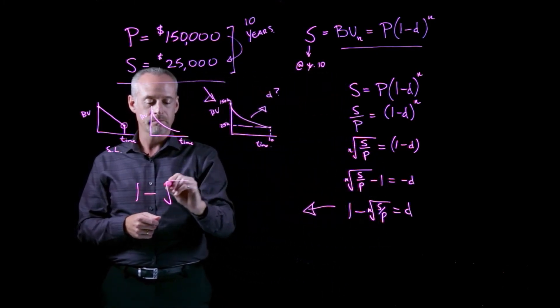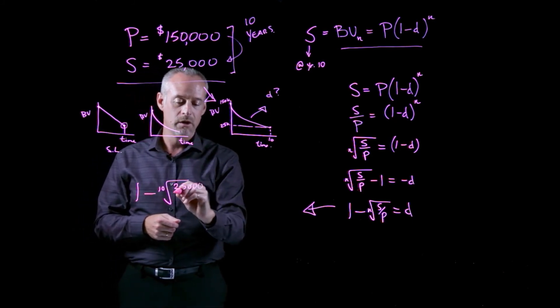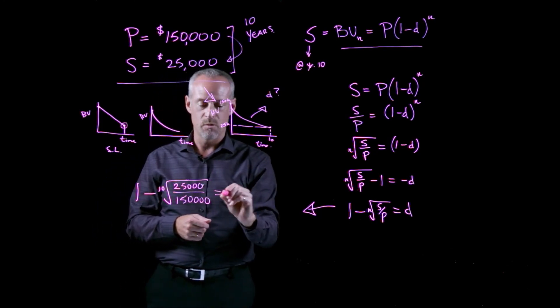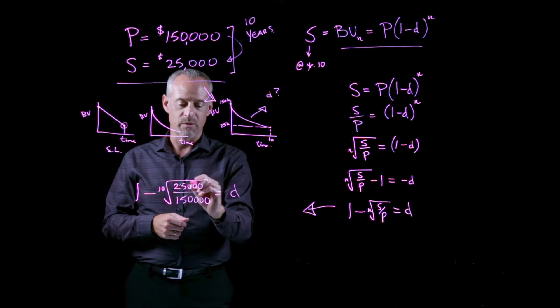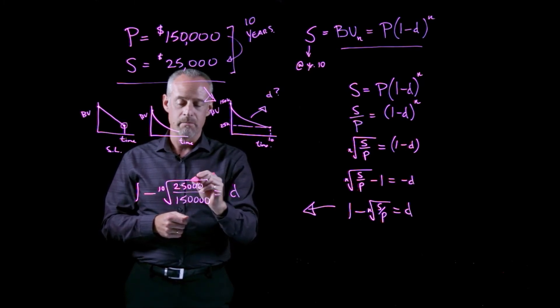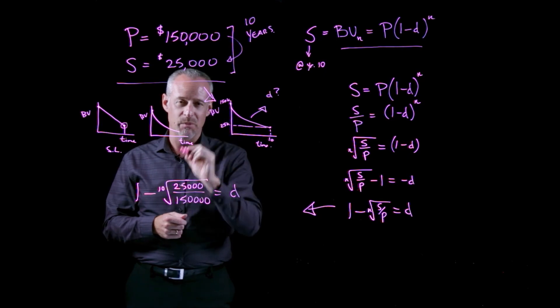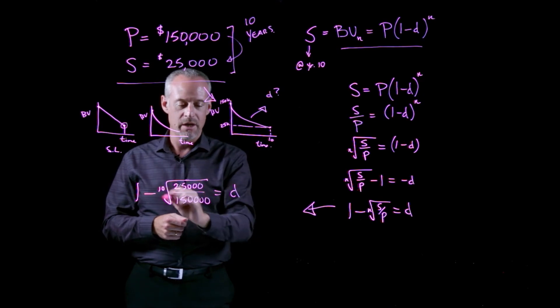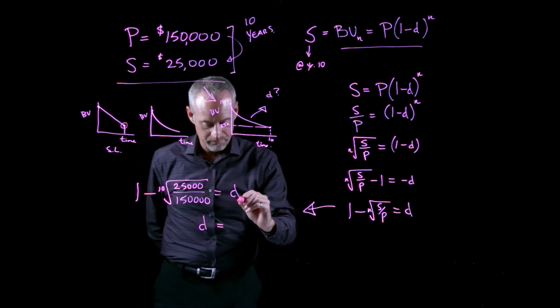So 1 minus the 10th root of 25,000 divided by 150,000 is equal to d. Make sure you know how to do this on your calculator. So I'm going to do 25,000 divided by 150,000, and then you can use the y to the 1 over x button, or maybe you have an nth root button.